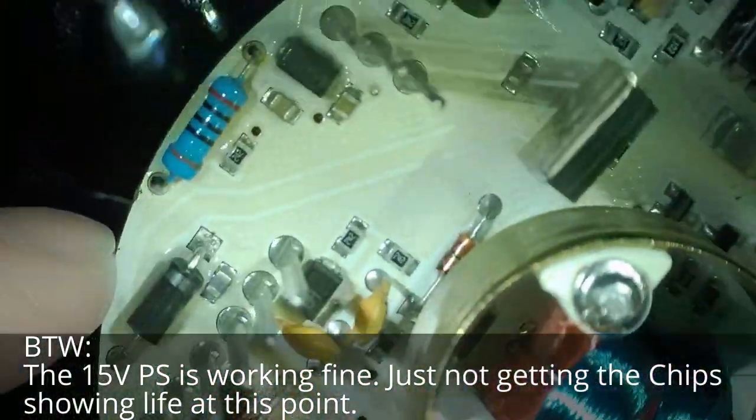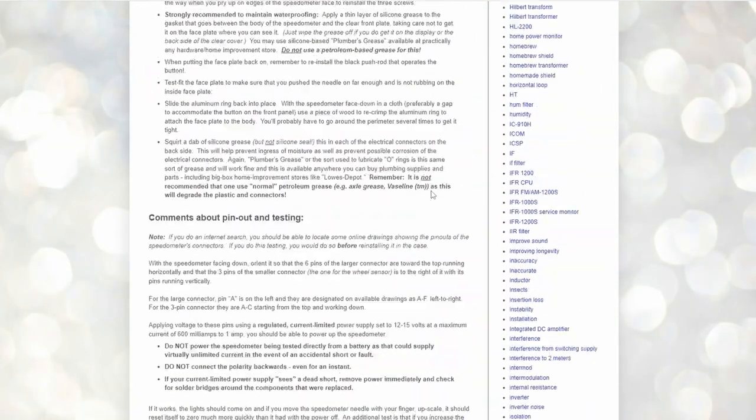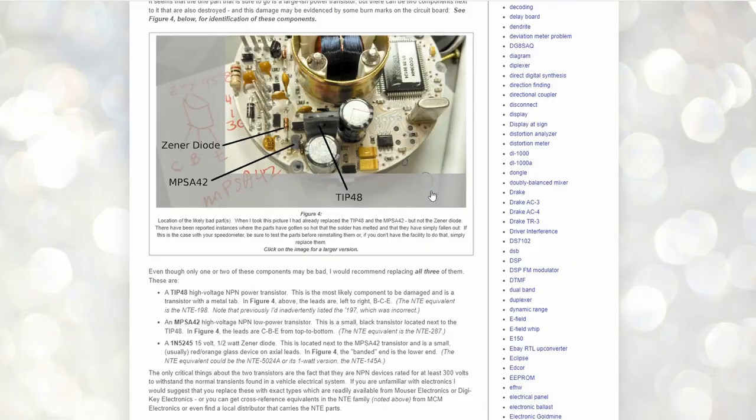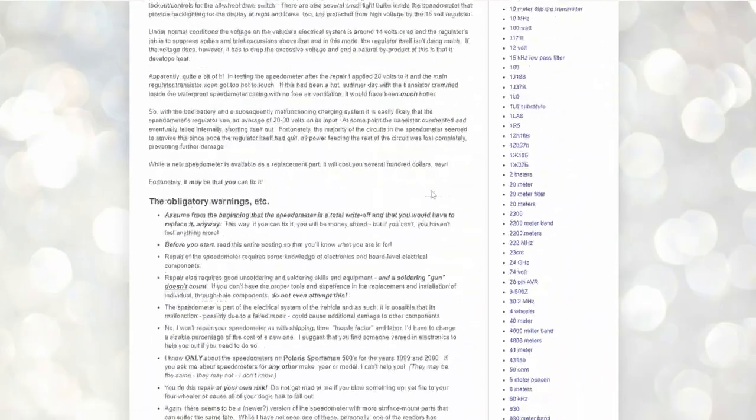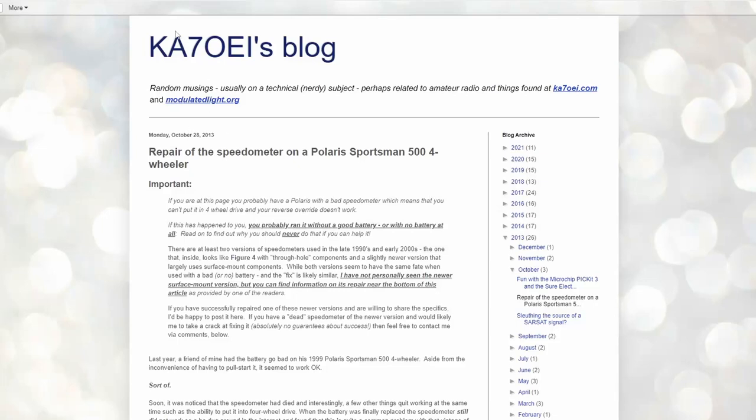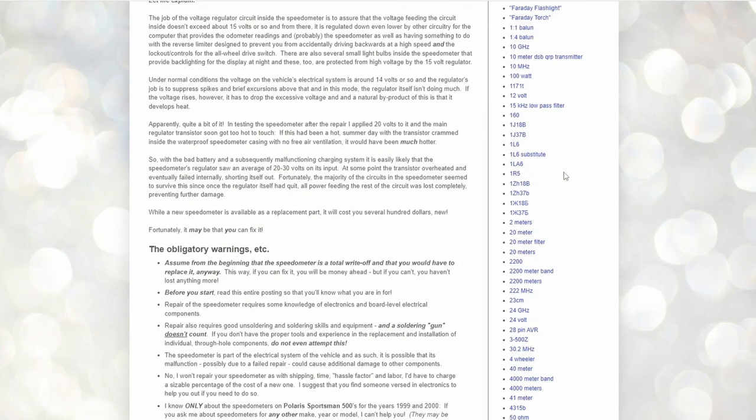So at this point I want to share with you a site that really really helped me out when you search for the Polaris like Sportsman speedometer or whatever. It's called KA70EI's blog. And I believe this is his amateur radio handle. But anyway he's got a blog on here that has been super helpful on this Polaris speedometer.